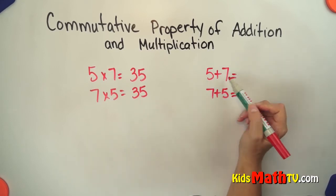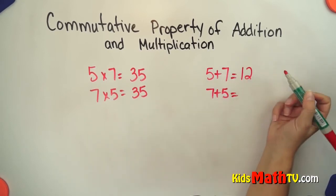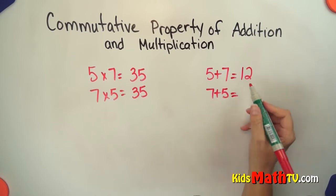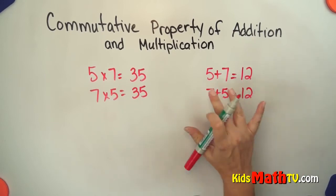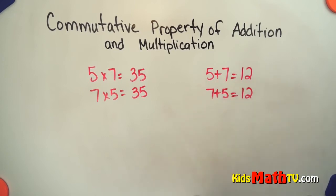If we add 5 plus 7 is 12 and if we add 7 plus 5 we get 12 as well. So the order doesn't matter, I can flip flop the order and it comes out to be the same answer.